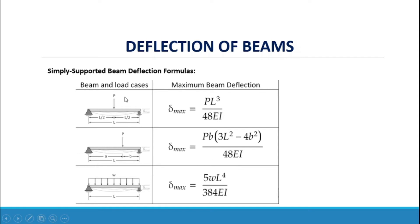Another case: we have the uniform load of a simply supported beam. As we discussed, the maximum deflection is equal to 5WL⁴ all over 384EI.